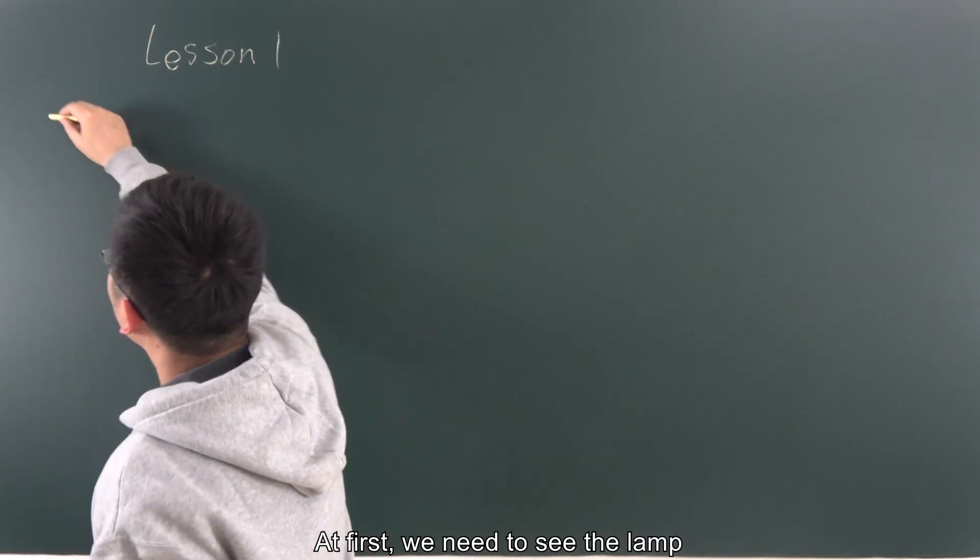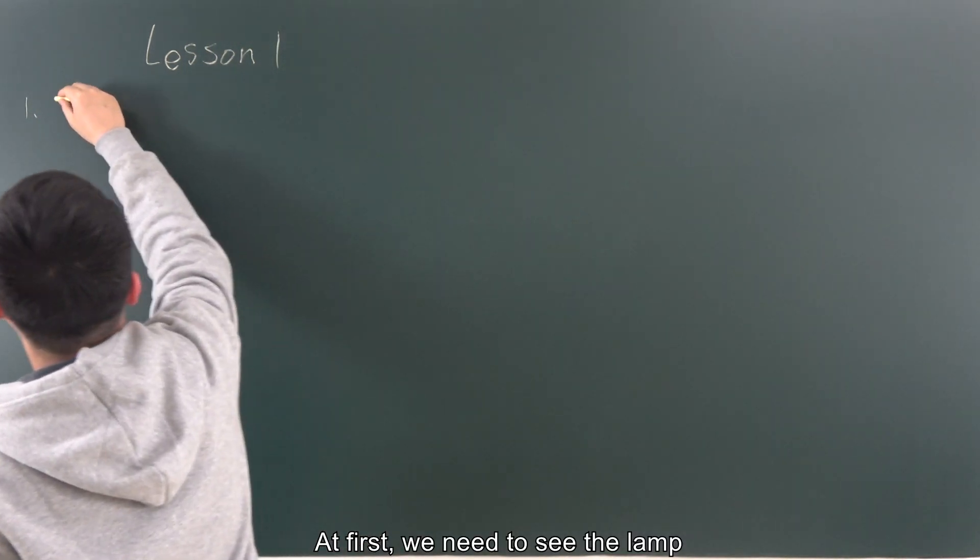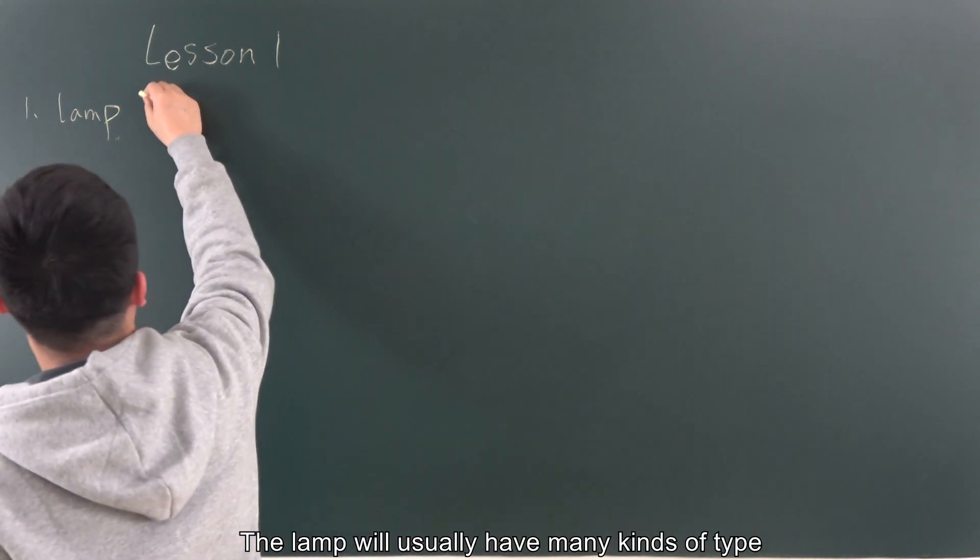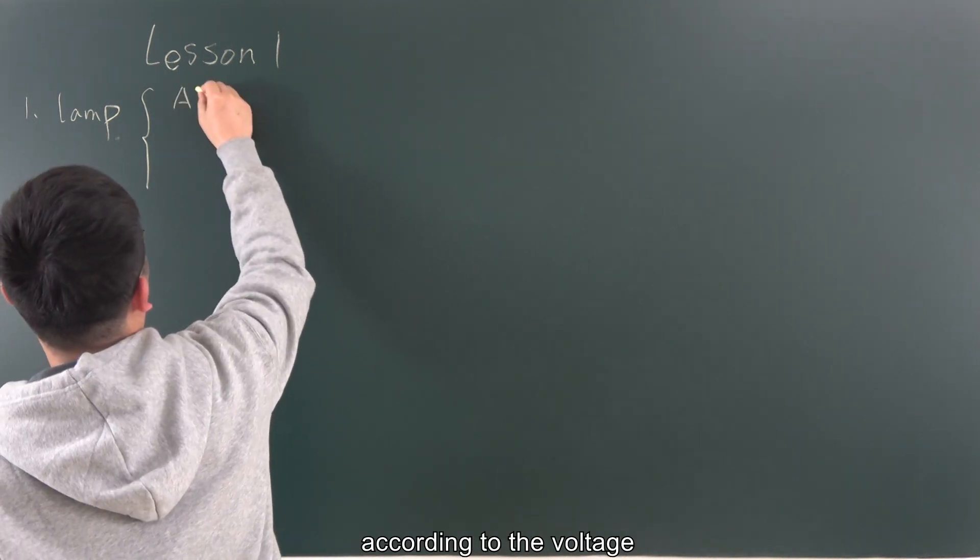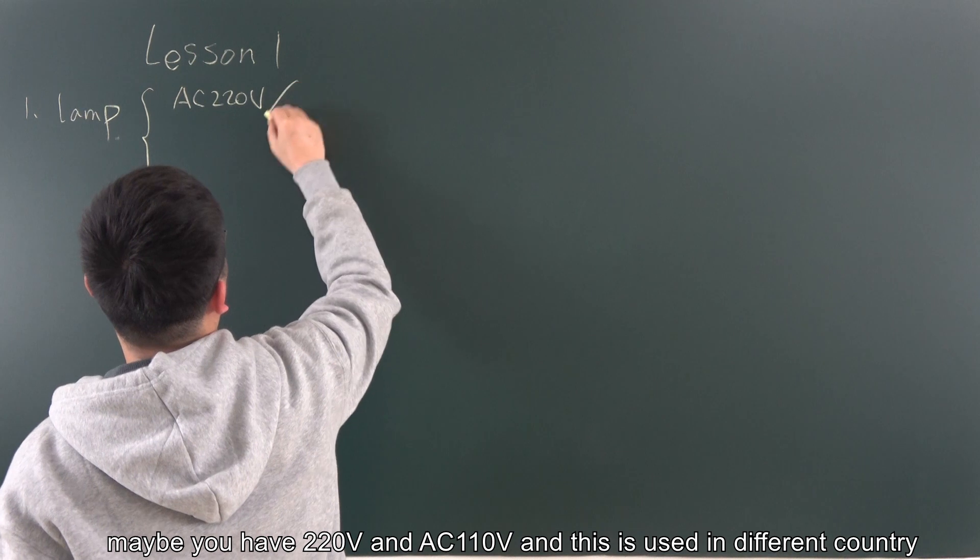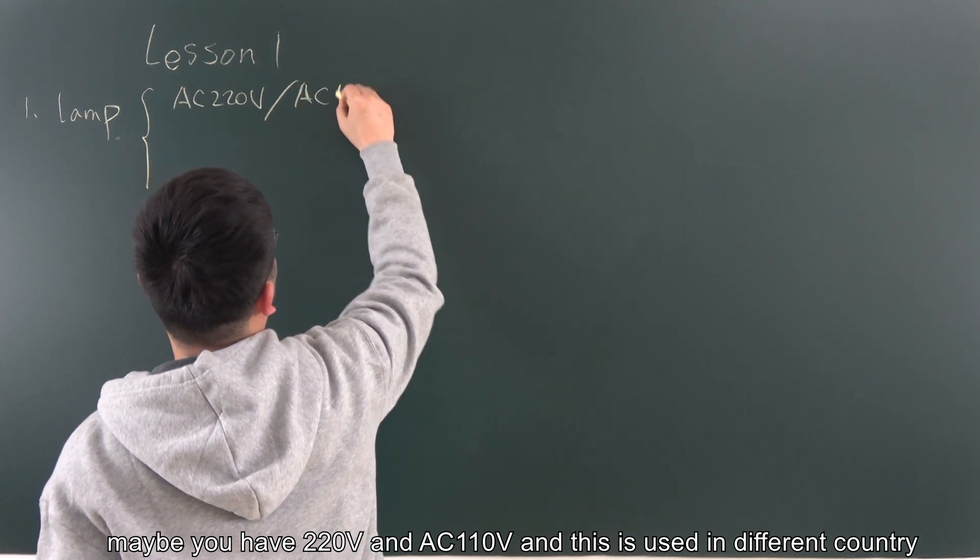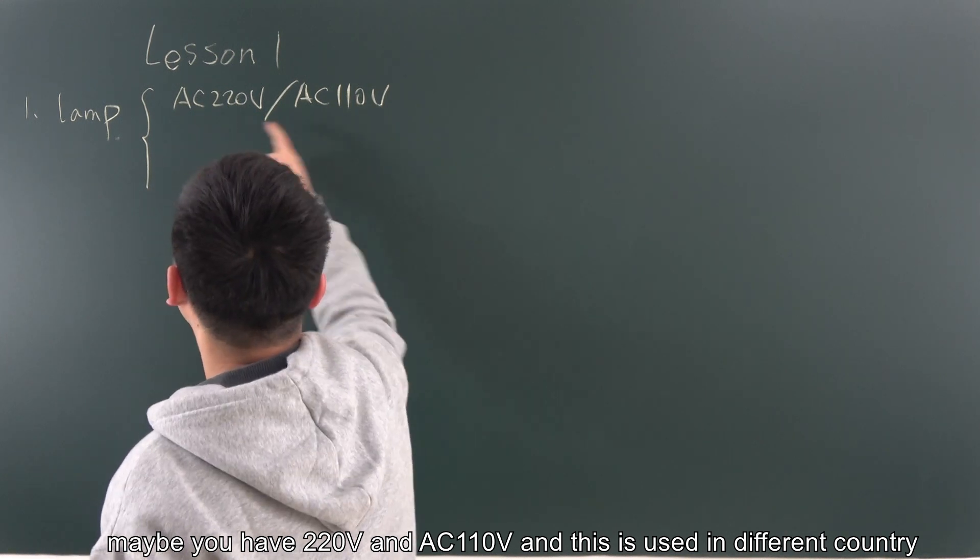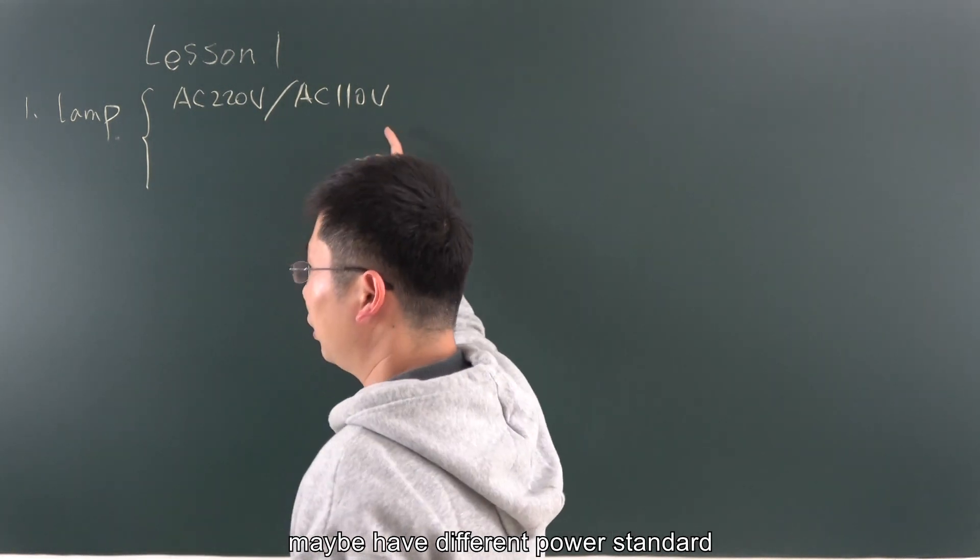So at first, we need to see the lamp. And the lamp will usually have many kinds of type. According to the voltage, maybe you have 220 voltage and AC 110 voltage. This is used in different countries, maybe have different power standards.